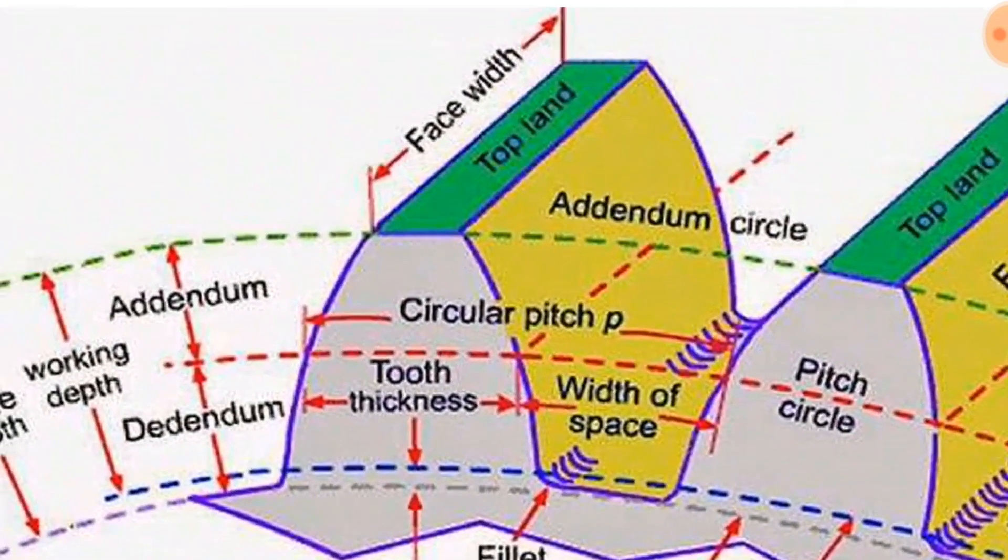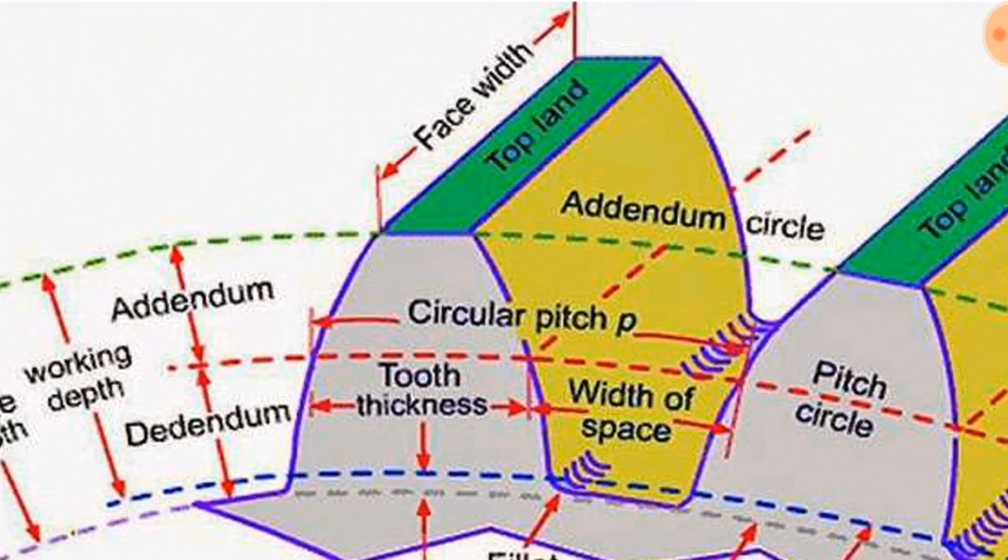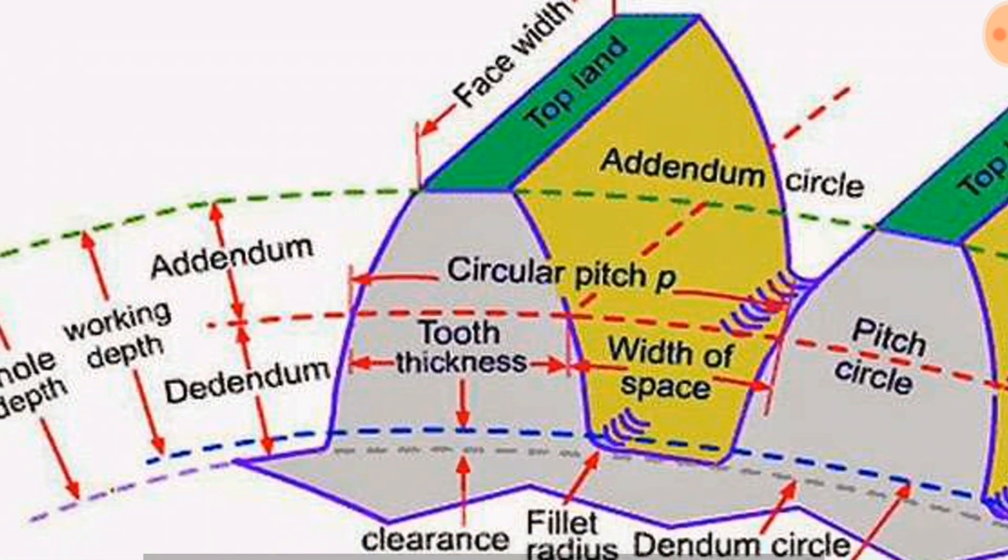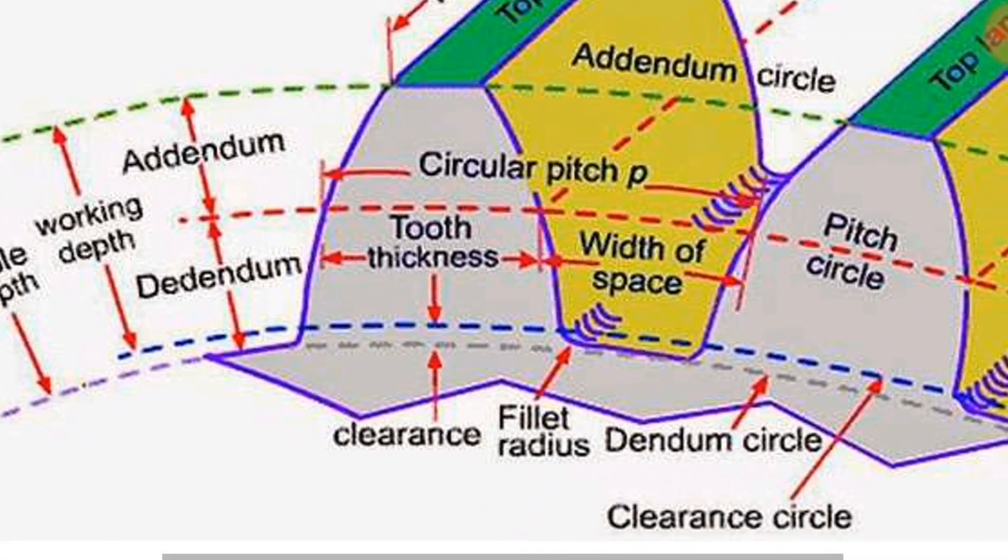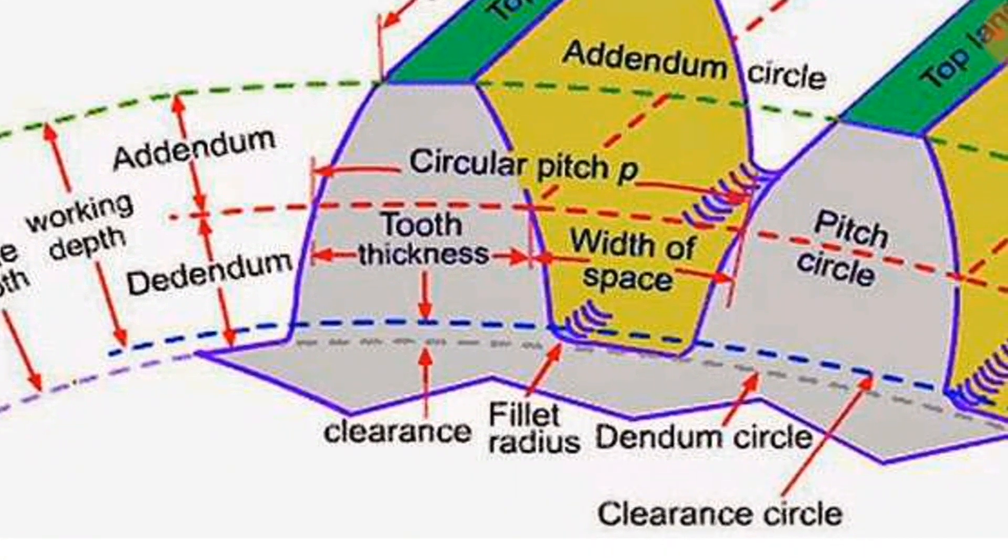Addendum: Addendum is the radial distance between the pitch circle and the addendum circle. Dedendum: Dedendum is the radial distance between the pitch circle and the dedendum circle. Dedendum circle: It is the innermost profile circle of the given gear.